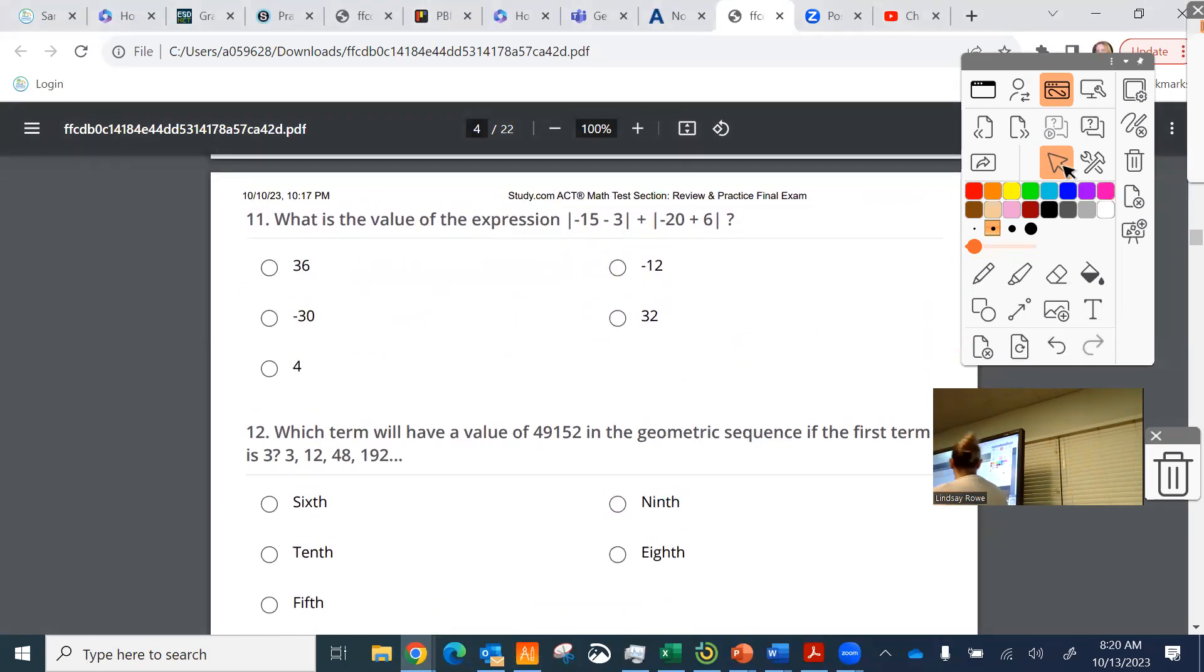Oh, what's the value? So this again has some absolute value pieces to it here. So without rewriting the problem, I'm just going to move it down here. So I've got the absolute value of negative 15 minus three. I got to work inside there like their parentheses. 15 minus three is negative 18. Plus the absolute value of negative 20 plus six. Negative 20 plus six is 14. The absolute value is negative 14. Plus 14, 18, 19, 20, 21, 22, 32. Boom.